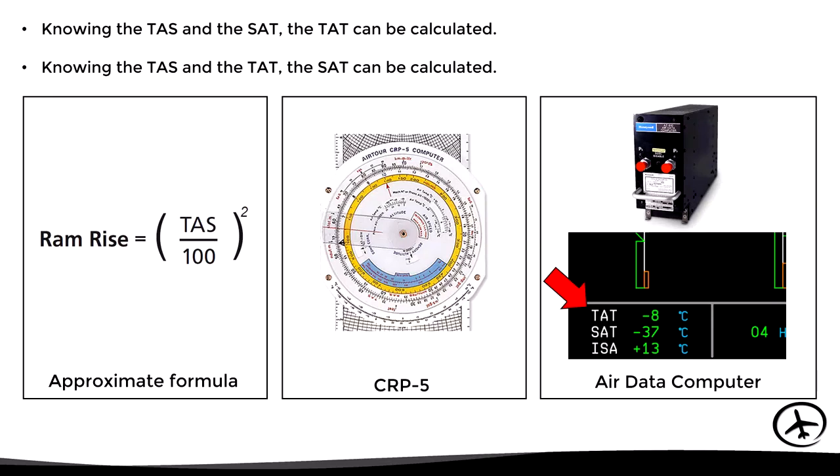The air data computer, in addition to calculating these temperature values, also calculates other important parameters such as the ISA deviation. It is important for the flight crew to know both the static and total air temperatures, as they are used for different purposes. For example, total air temperature is used to determine icing conditions, while static air temperature is used in performance calculations as well as for airspeed and altitude corrections.